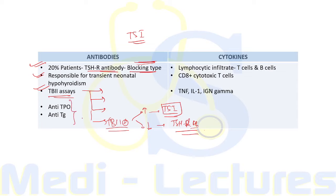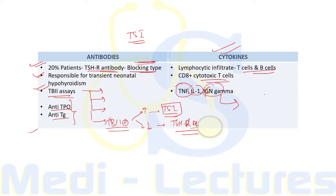Anti-TPO and anti-thyroglobulin antibodies are also present in autoimmune thyroid diseases and are clinically useful markers of thyroid autoimmunity. These amplify the ongoing complement-mediated immune response but do not act directly in the pathogenesis. In autoimmune hypothyroidism, the lymphocytic infiltrate is composed of activated T cells and B cells, with CD8-positive cytotoxic T cells as the chief regulators. Cytokines include TNF, interleukin-1, and interferon gamma, which is associated with increased thyroid gland apoptosis.